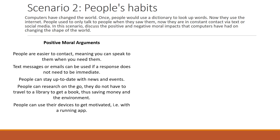Our positive arguments include: people are easier to contact in the modern era, meaning you can speak to them when you need them rather than waiting until you see them. Text messages or emails can be used if a response does not need to be immediate — where once you'd have to ring somebody or see them in person, now you can leave a text and they respond in their own time. People can stay up to date with news and events instantly on their phones, tablets, or computers. People can research on the go without travelling to a library, saving money and benefiting the environment. And people can use their devices to get motivated, for example using apps to track running, fitness, and daily routines.